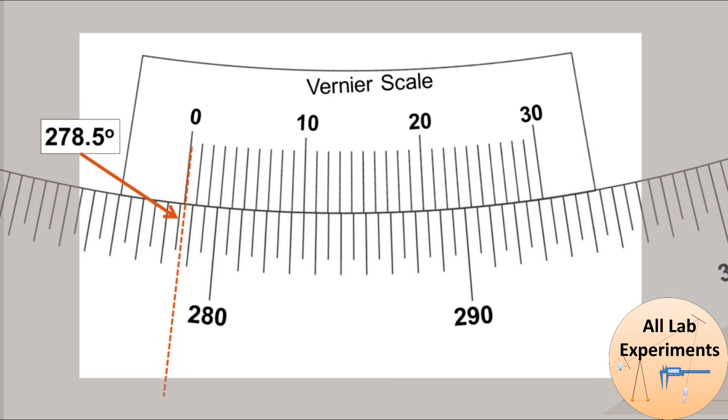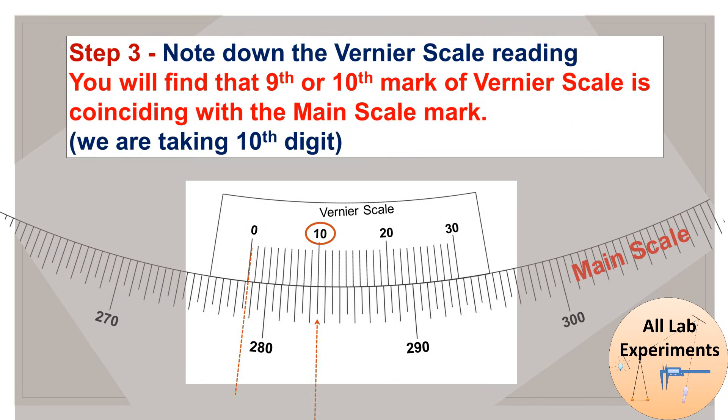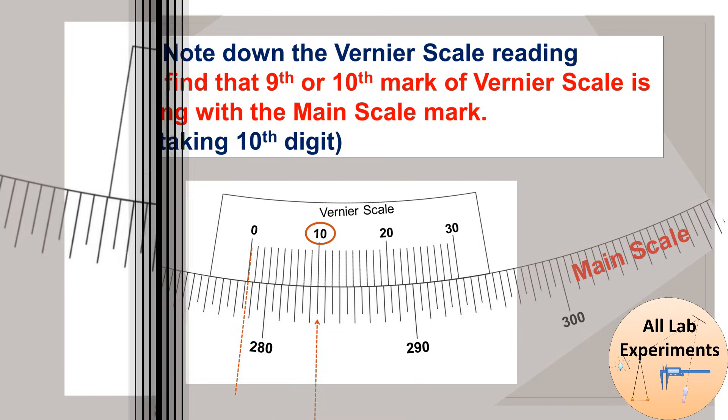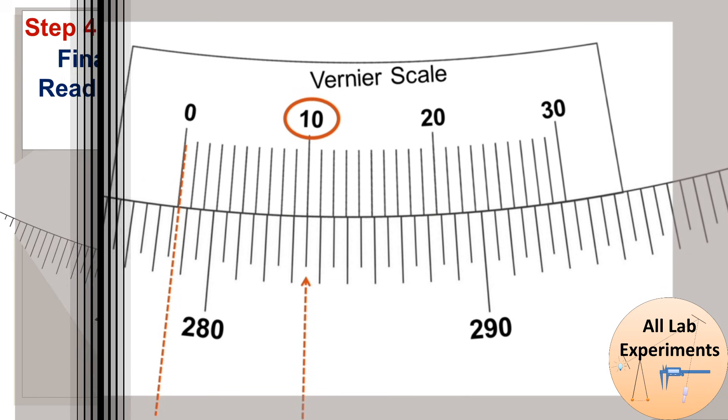Now step 3: note down the vernier scale reading. Now we need to check out which vernier scale mark is coinciding with any of the main scale marks. As you can see, the 10th mark of vernier scale is exactly matching with the mark of the main scale. So your vernier scale reading is 10.